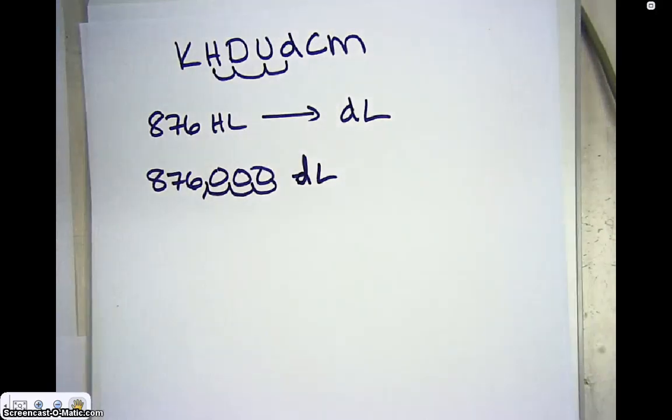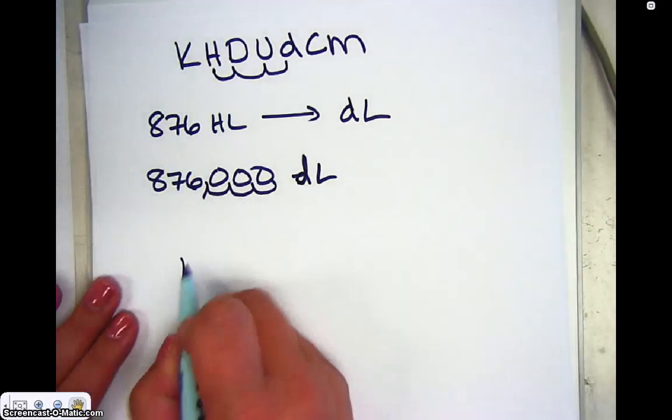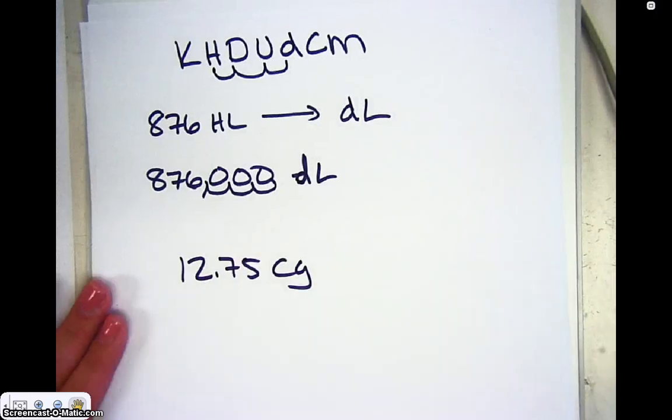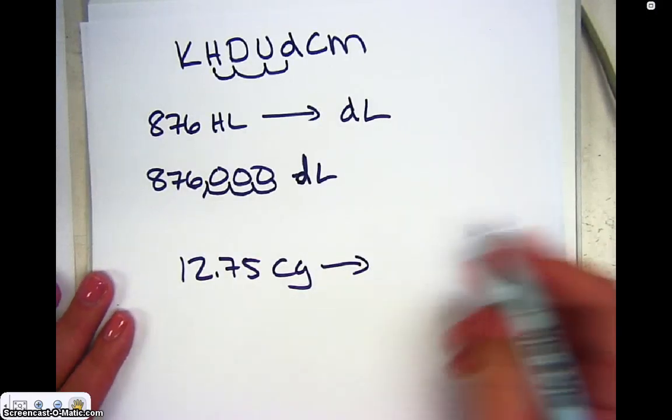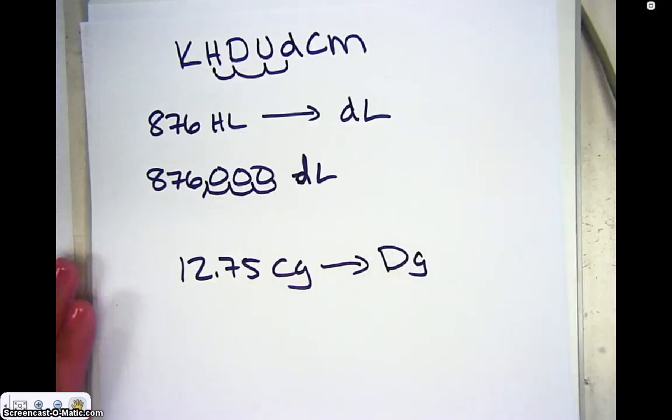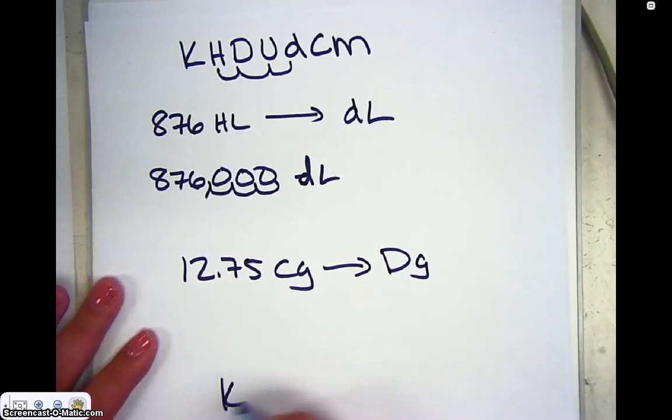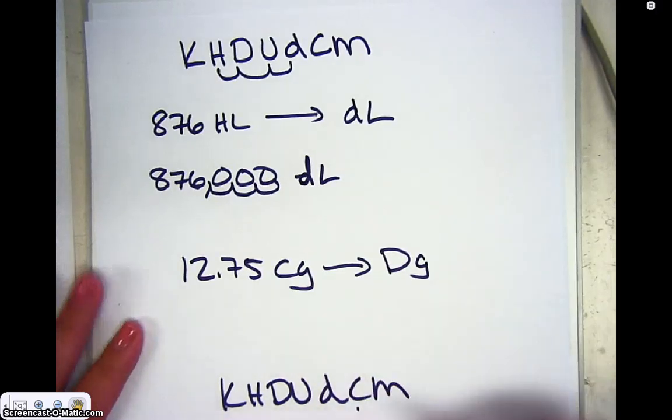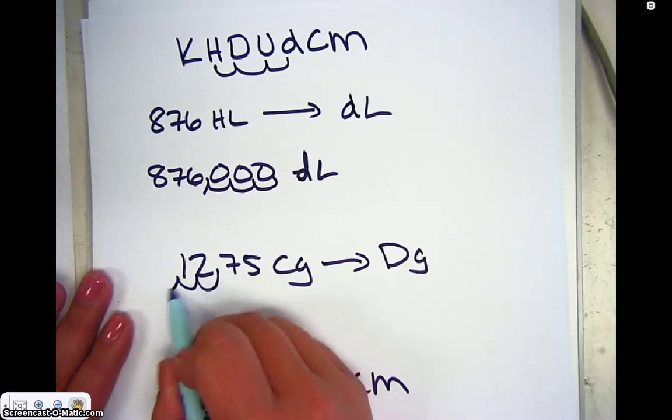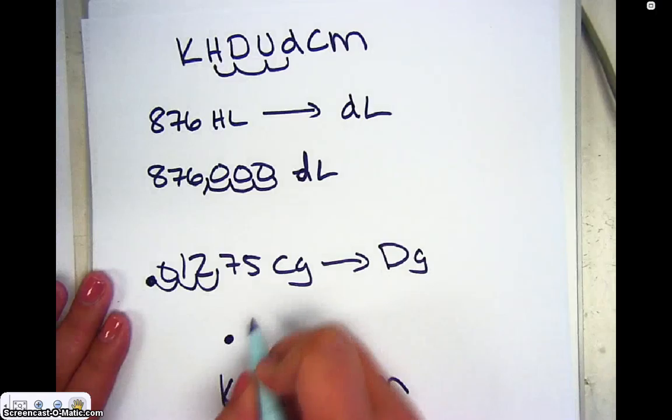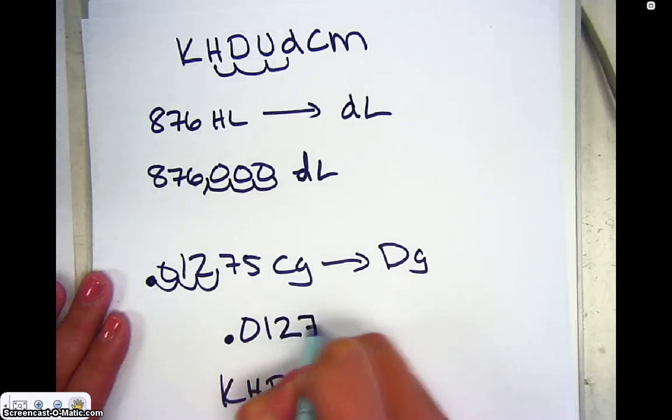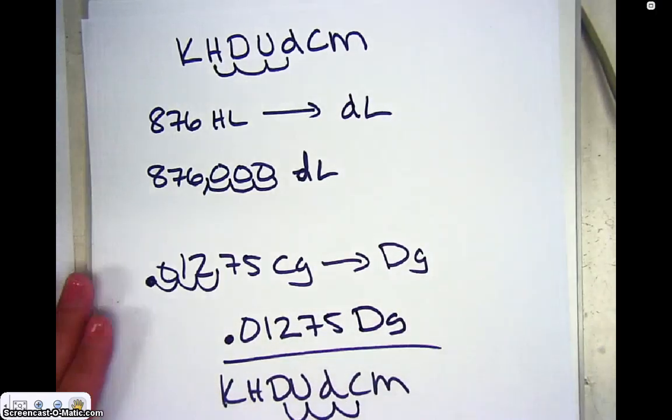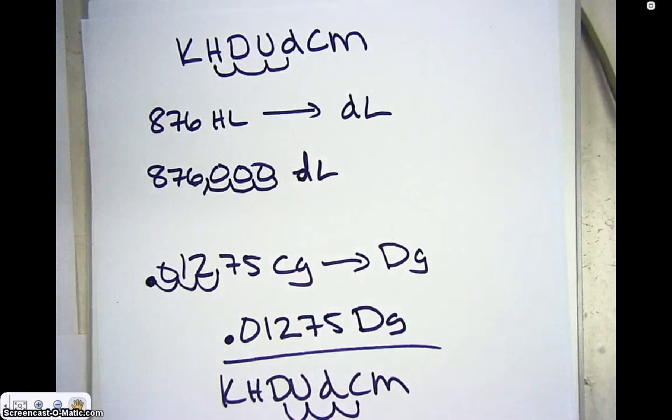Let's just do one more. So let's say I've got like 12.75 centigrams. And I want to convert that to let's say big D decagrams. And I take my King Henry died unfortunately drinking chocolate milk. And I'm going to start with my C and go to my big D. So I go one, two, three places to the left. One, two, three places to the left. .01275 decagrams. And again, we'll do a couple of these examples in class and you'll get to practice with them and get the hang of it again.